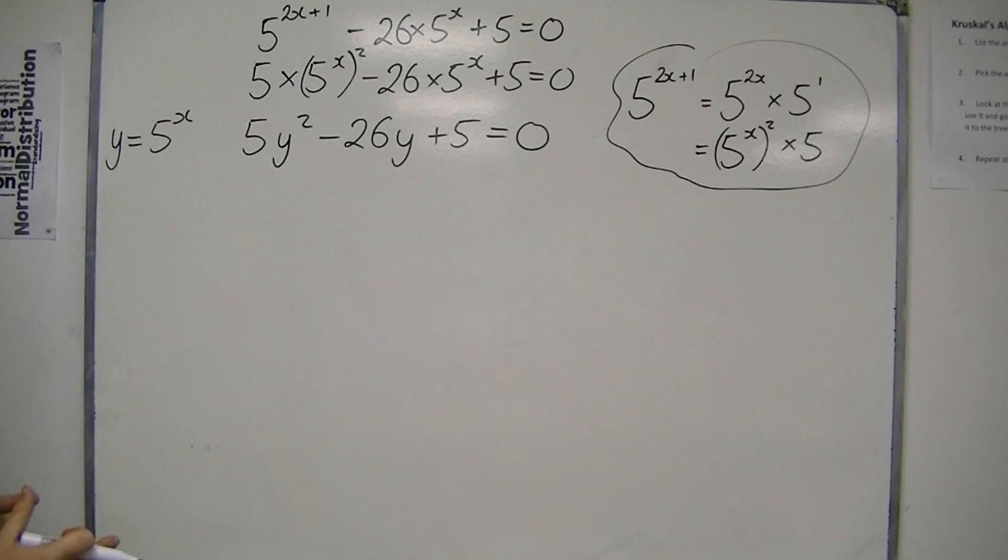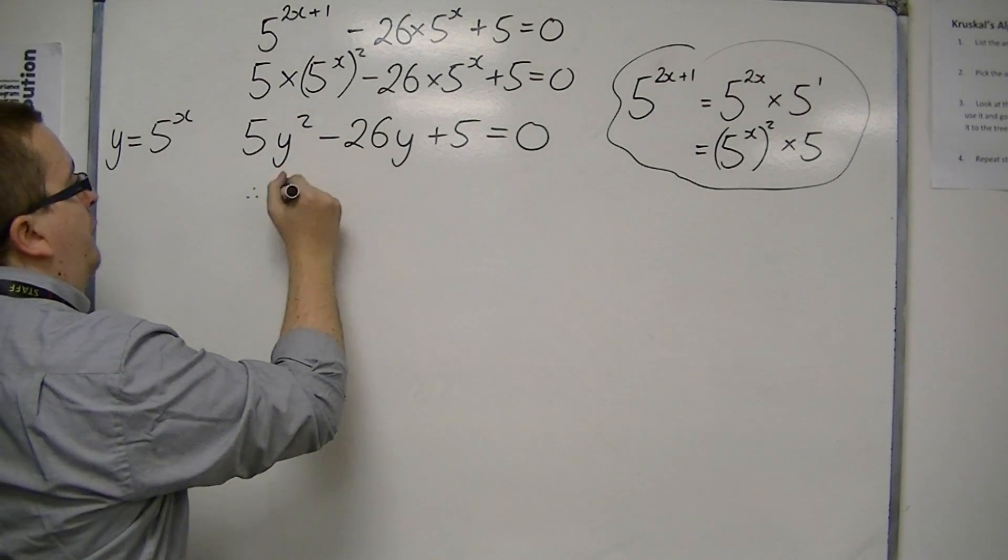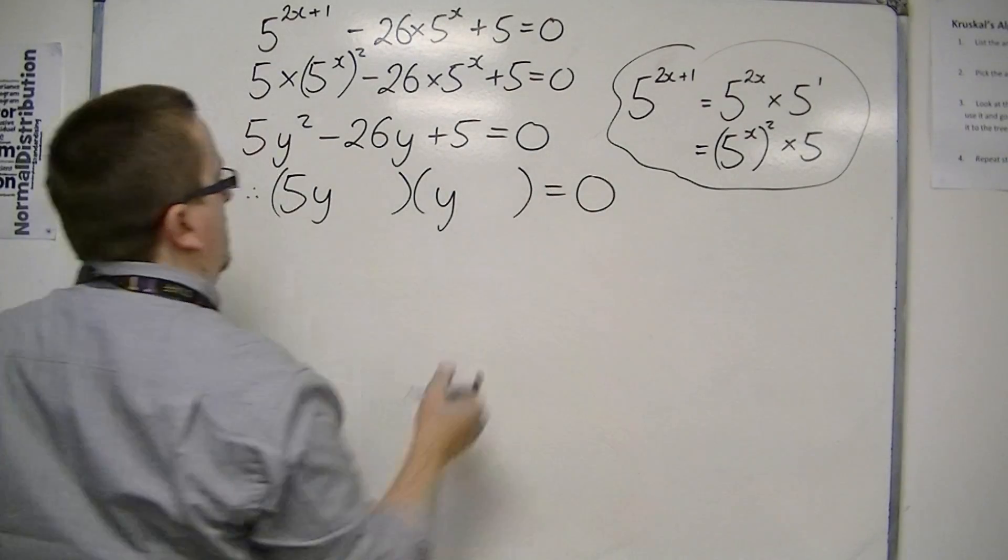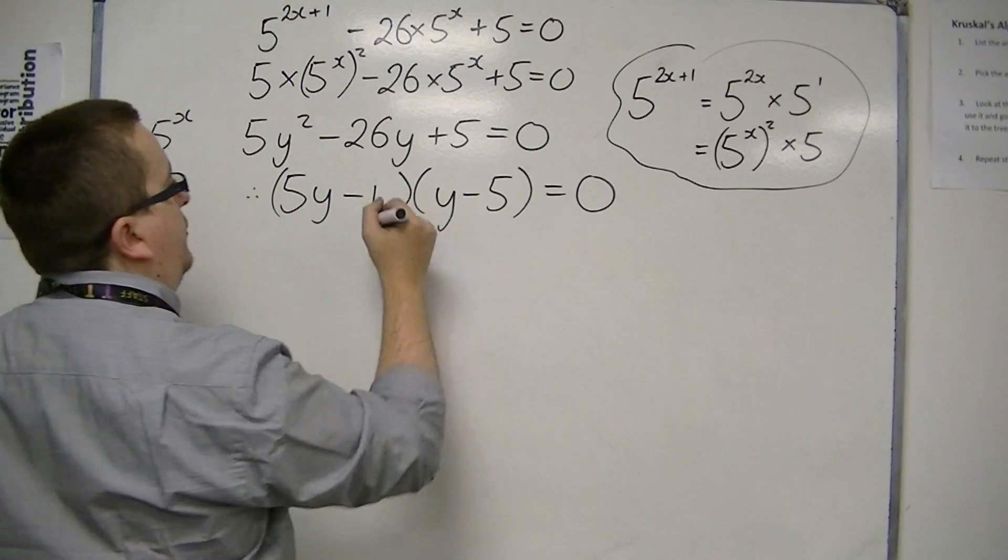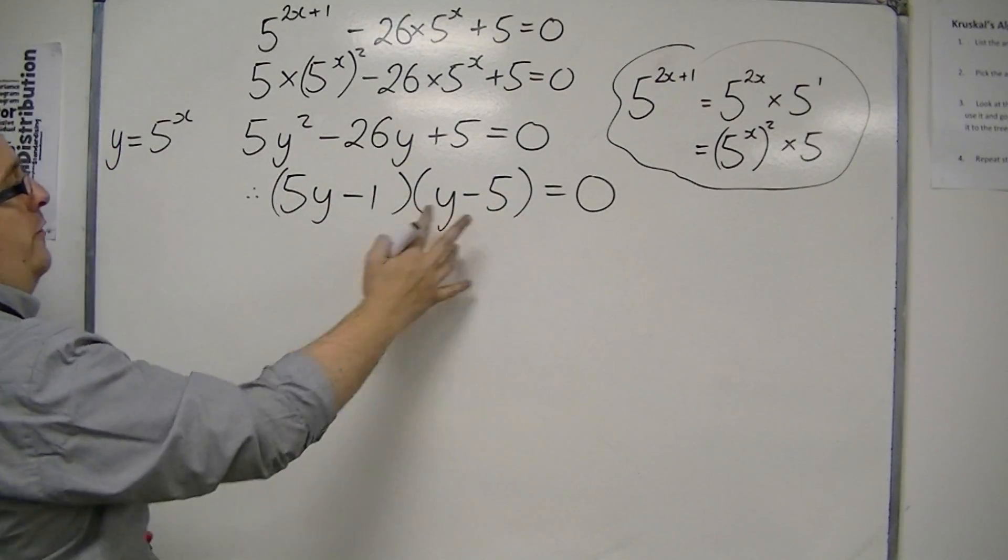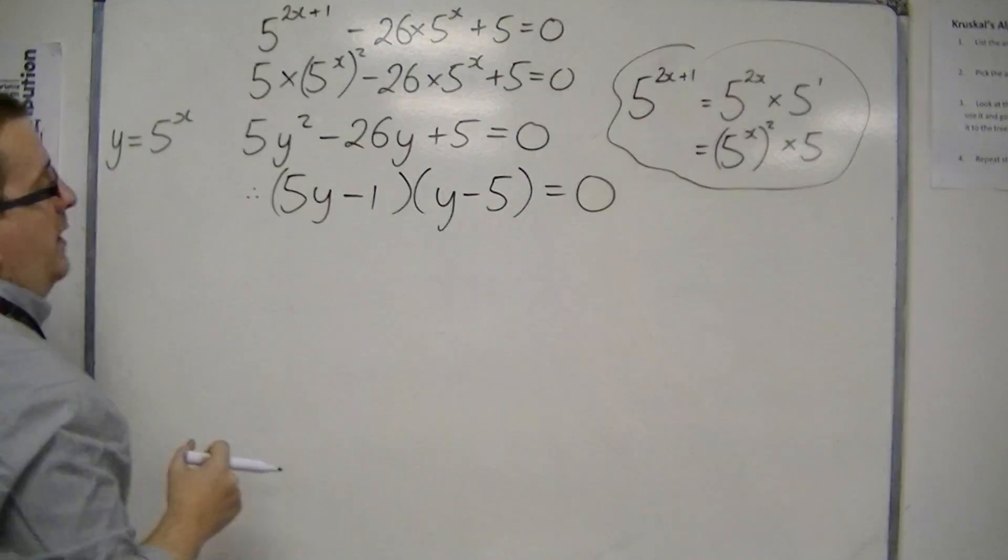So this can be factorised. We've got 5y and then y. We're going to have to have a minus 5 there and a minus 1 there in order to get minus 25y, take away another y. And minus 1 times minus 5 makes the plus 5.